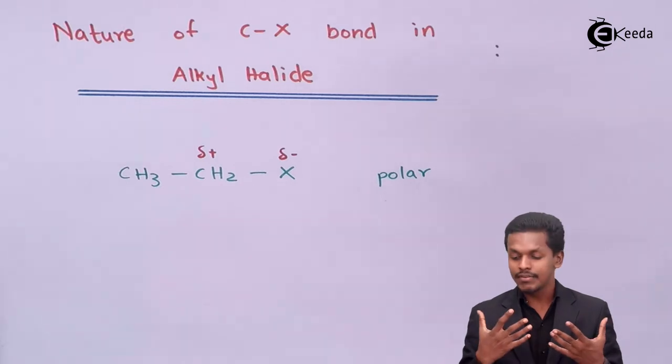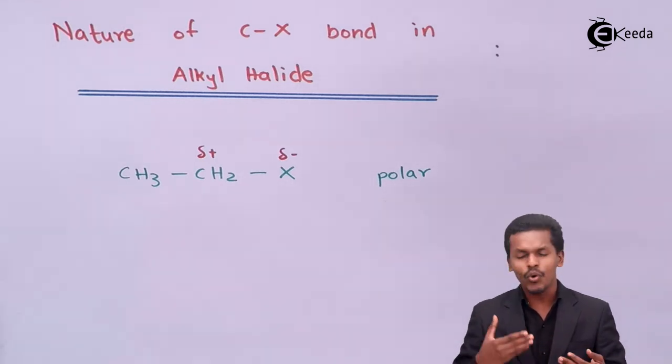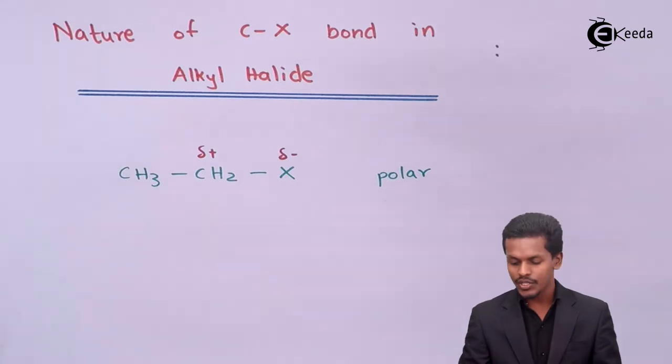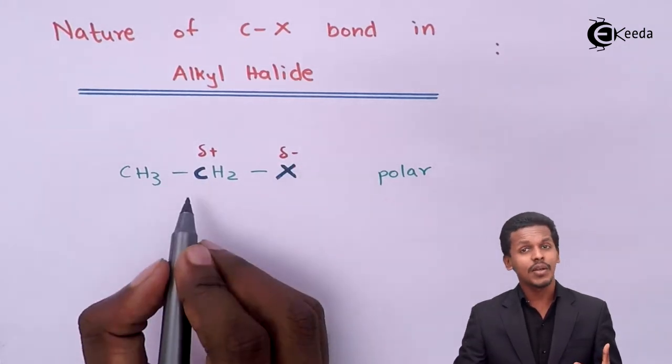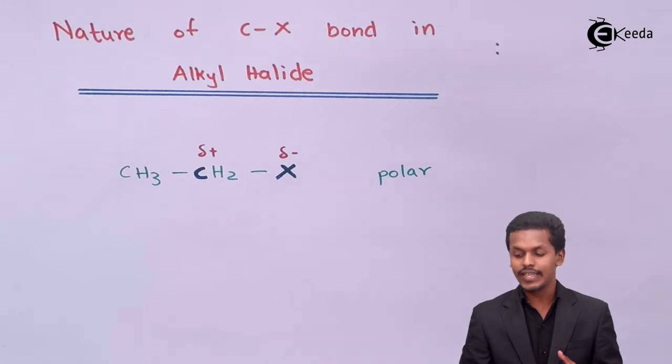Now let us move on to the behavior — how the overlapping takes place and what is the nature of this C-X bond. The carbon exhibiting sp3 hybridization has p orbitals, and one of its sp3 hybrid orbitals overlaps with the p orbital of the halogen.